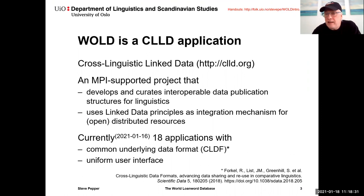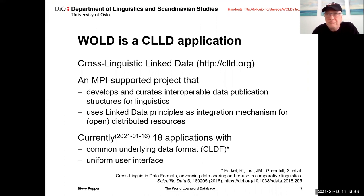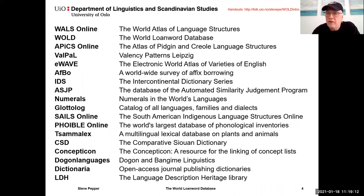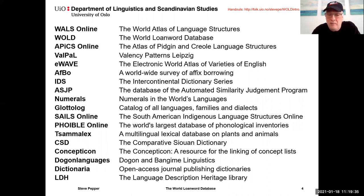WOLD is a CLLD application. CLLD stands for Cross-Linguistic Linked Data, a Max Planck-supported project that develops and curates interoperable data publication structures for linguistics, using linked data principles as an integration mechanism for open distributed resources. As of mid-January 2021, the CLLD website lists 18 applications which share a common underlying data format — the CLDF — and a uniform user interface. Some of these you will be familiar with, such as WALS, the World Atlas of Language Structures. Others include Glottolog, which I hope you all use, and Dictionaria, useful for documenting lesser-studied languages.